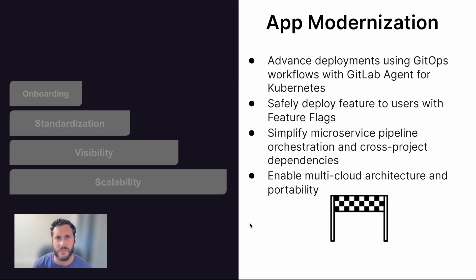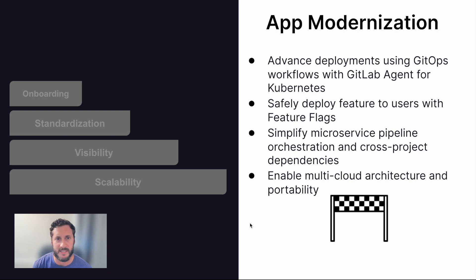Now, another initiative we see with customers is migrating their legacy monolithic apps and modernizing how they are in the cloud. GitLab can support this initiative in a number of ways. If your team is deploying to Kubernetes, there is a GitLab agent for Kubernetes solution that can manage GitOps workflows or advanced deployments. Progressive delivery has been a common topic as well — how can you safely deploy features to your users and quickly roll back? Feature flags can serve your applications and all be managed within GitLab.